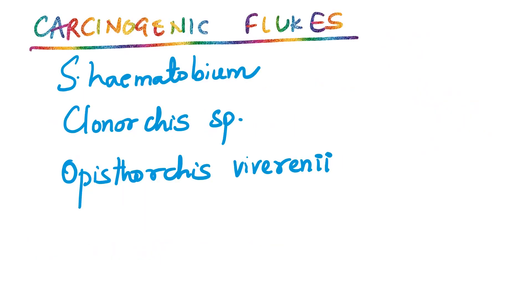Let me finish our discussion on flukes by reminding you that there are three flukes which are carcinogenic. Schistosoma haematobium is associated with squamous cell carcinoma of the bladder. Clonorchis species and Opisthorchis viverreni are associated with cholangiocarcinoma. That's all for today. If you like this video, please press the like button and subscribe to my channel if you are not already a subscriber.